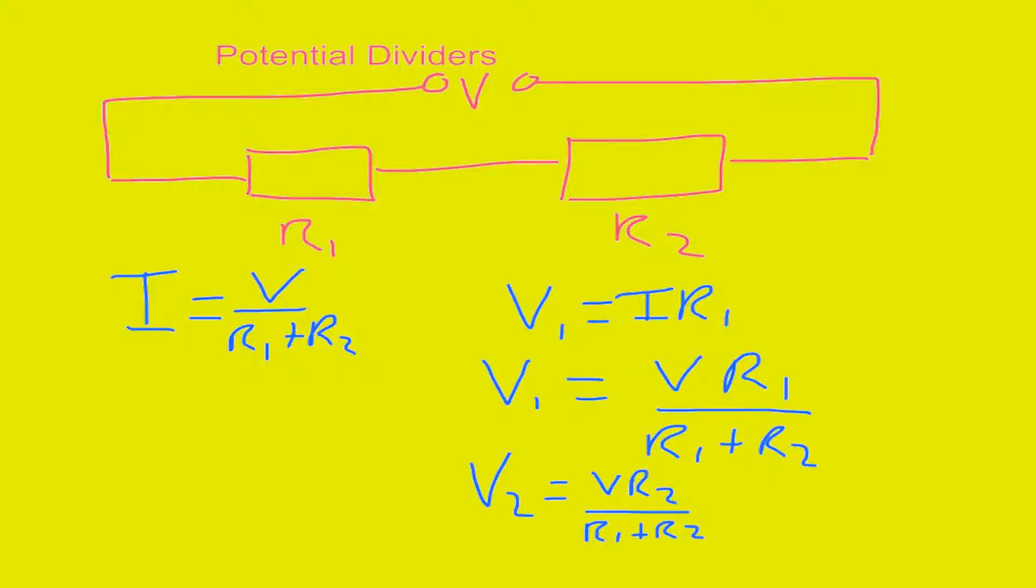This should end up with the same result as before, but it's an easier way to calculate the voltage across it if we just want to know the voltage across one of the resistors.